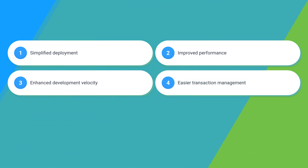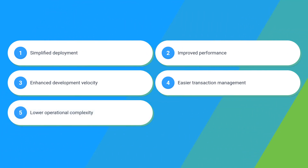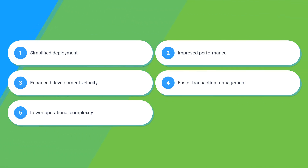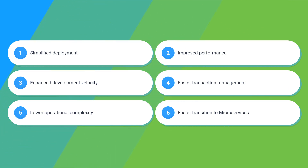Easier transaction management: managing transactions in a distributed system is very challenging; modular monoliths simplify this since modules can share the same database. Lower operational complexity: modular monoliths reduce the operational overhead that comes with managing and deploying a distributed microservices system. Easier transition to microservices: a well-structured modular monolith offers a clear path to a microservices architecture — you can gradually extract modules into separate services when the need arises.